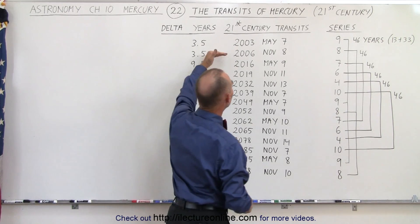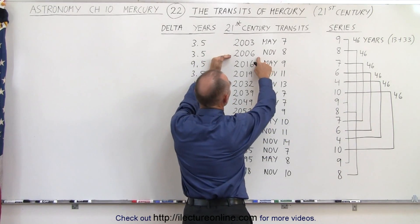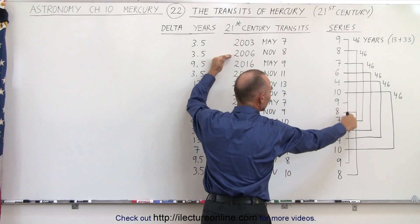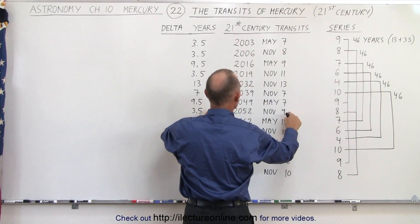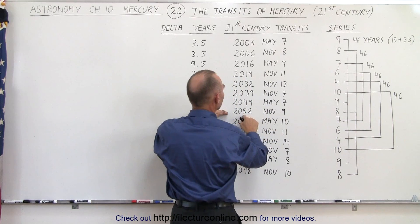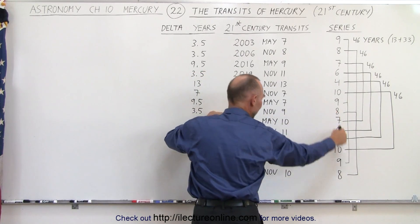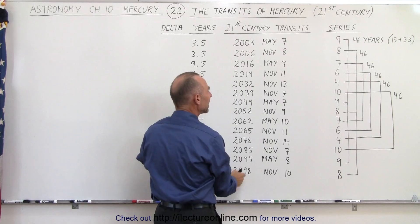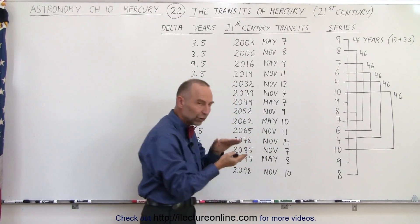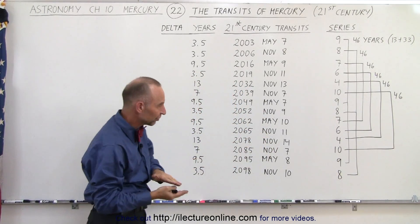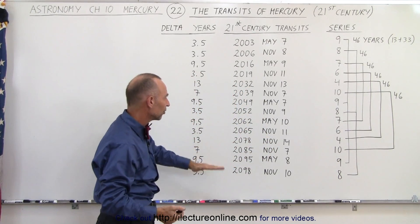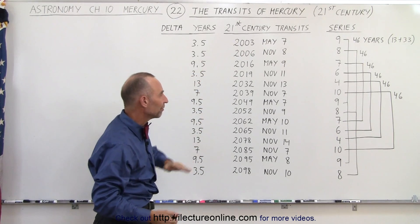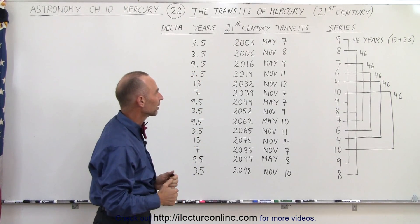Here we have series 8, where we had a transit in 2006, November 8th. Then if you look at the next event, this was November 9th, 2052 — 46 years later. And the next event, November 10th, 2098. Again, a very slow shift in the calendar, and you can see that they're all roughly 46 years apart.